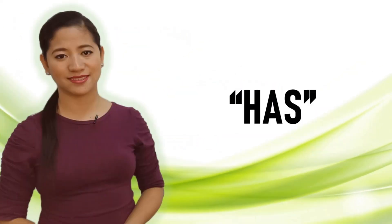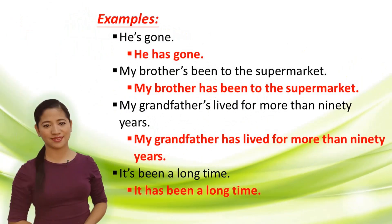Contraction: 'has'. Examples — He's gone, it means he has gone. My brother's been to the supermarket — my brother has been to the supermarket. My grandfather's lived for more than 90 years — my grandfather has lived for more than 90 years.